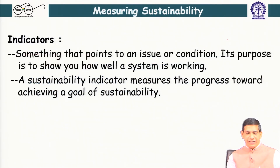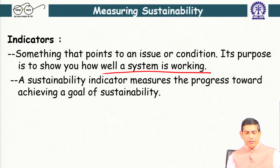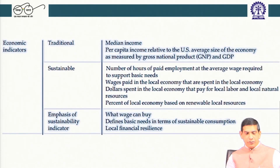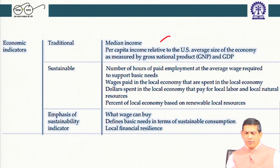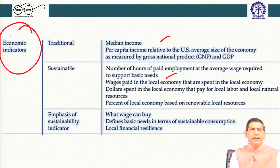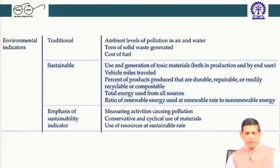A sustainability indicator points to an issue or condition and shows how well your system is working. A sustainability indicator measures progress towards achieving the goal of sustainability. For economic indicators, examples include: median income, number of hours paid to employees, wages paid, what wages can buy, and defining basic needs.